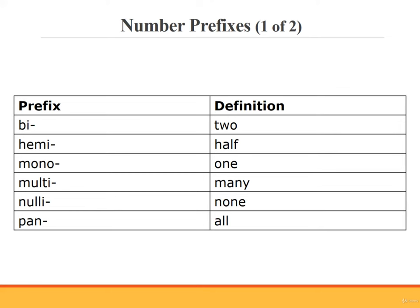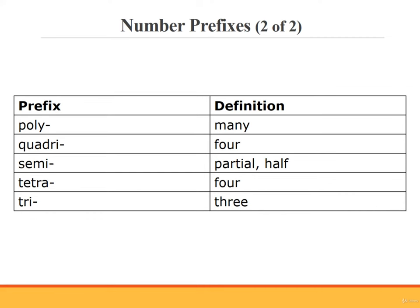The number prefixes are as follows. Bi means two. Hemi refers to half. An example of a medical term using the prefix hemi is hemiplegia, which means paralysis on one half — either the right or the left side of the body. Mono is one. Multi means many. Nulli means none. Pan means all. Poly means many. Quadri means four. Semi means partial or half. Tetra means four. Tri means three.